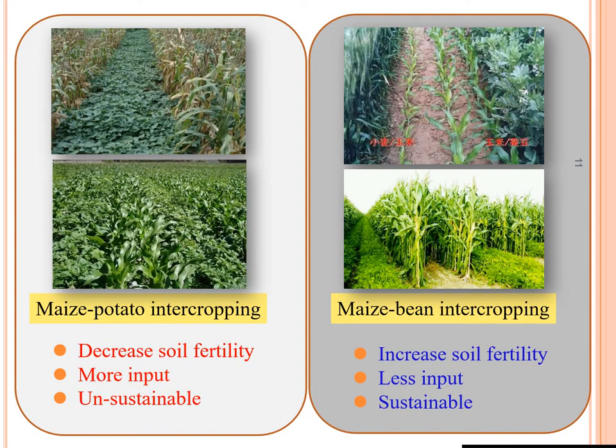Comparing maize-potato and maize-bean intercropping systems: the maize-potato system decreases soil fertility, requires high inputs such as nitrogen, phosphorus, and potassium fertilizers, and is unsustainable. However, the maize-bean intercropping system increases soil fertility, requires less nitrogen input, and is sustainable.